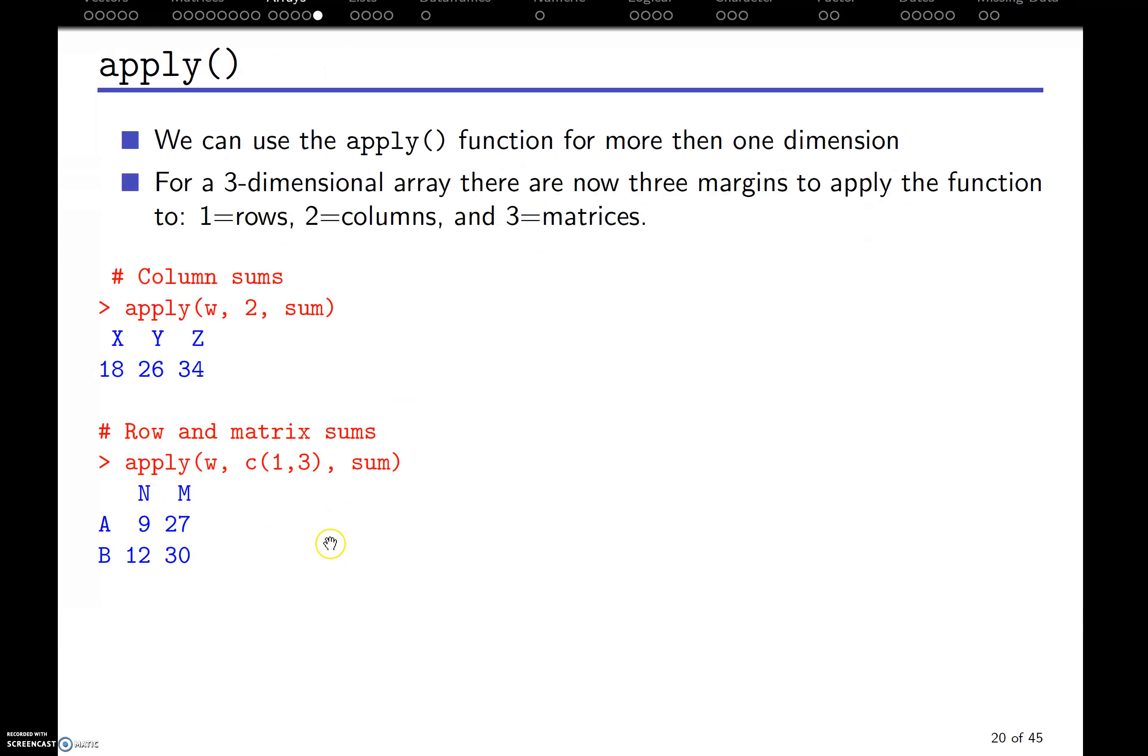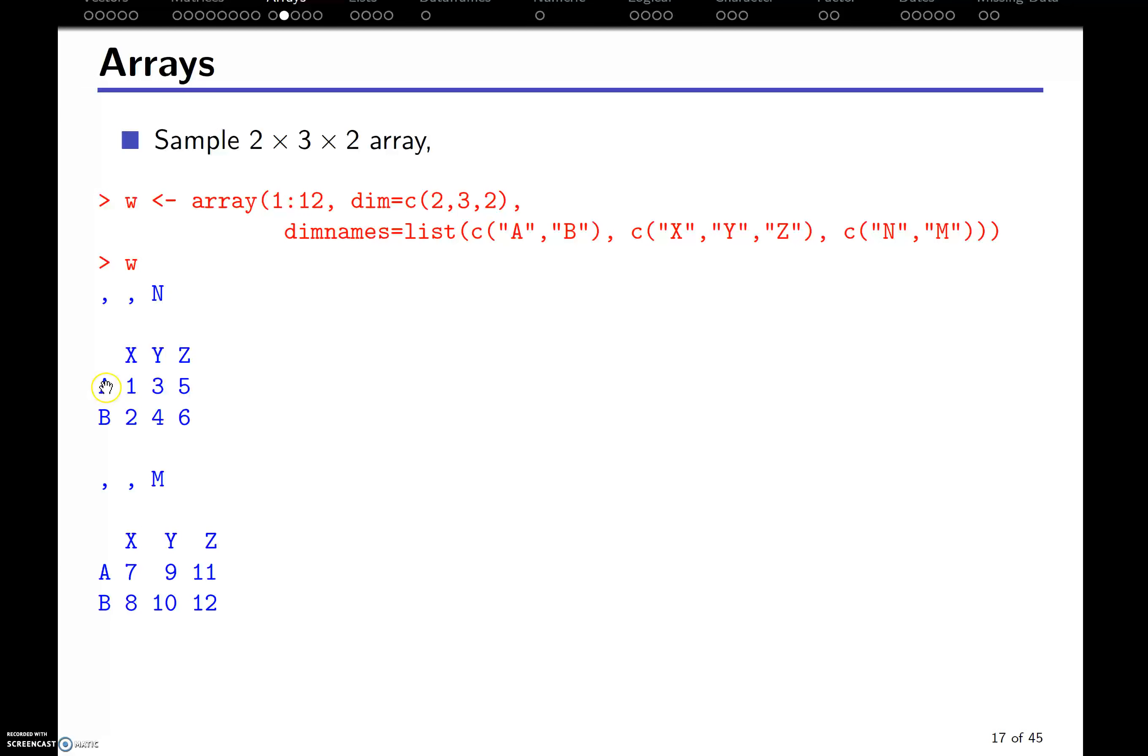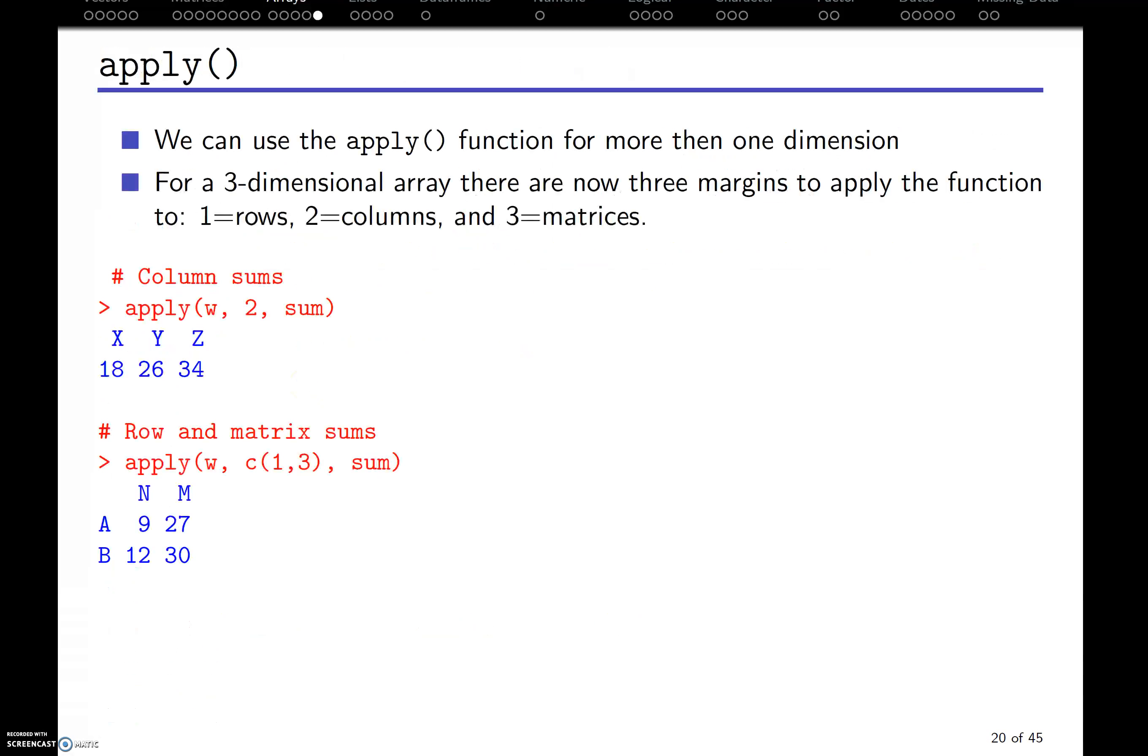But similarly, we could do something like go across the rows and the matrices. Then we just get back everything that is summed across each row and matrix. So, for example, A and N. Well, let's go back and look how they got that 9. Well, across A, and then here's the Nth dimension. The sum across that A for the entire Nth dimension is 1 plus 3 plus 5, which gives you 9, and so on. So make sure you understand in the practice after this section, we're going to apply a lot of these apply functions and make sure that we understand them.